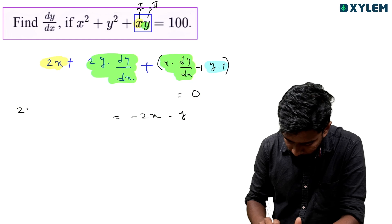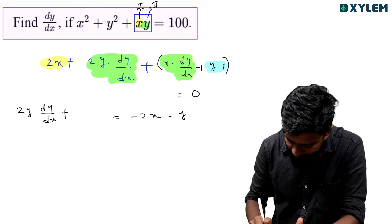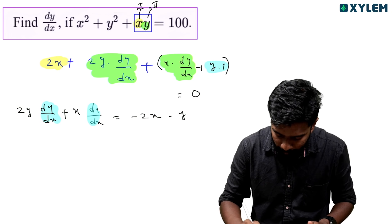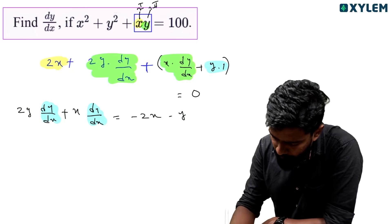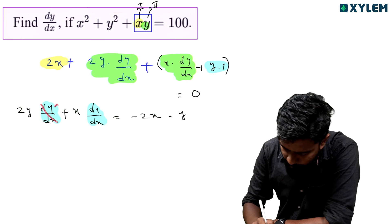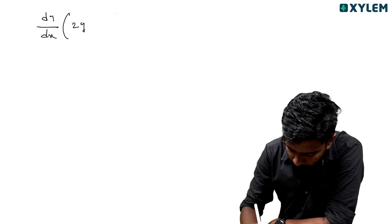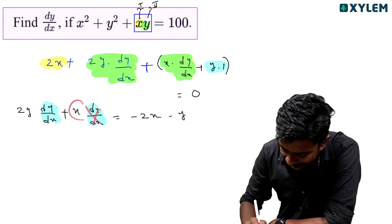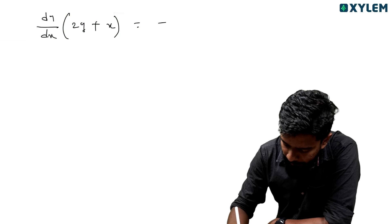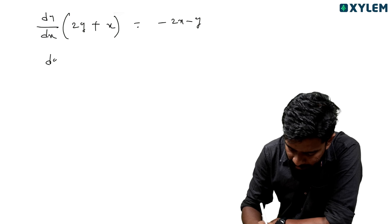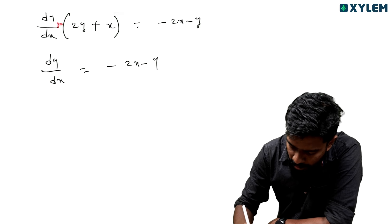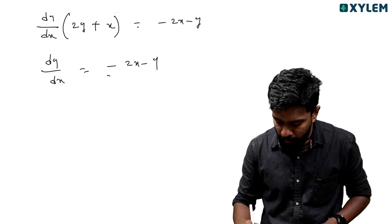We get 2y plus x times dy/dx. Taking dy/dx common: dy/dx times (2y plus x) equals minus 2x minus 1. At last, dy/dx equals minus (2x plus y) divided by (2y plus x).